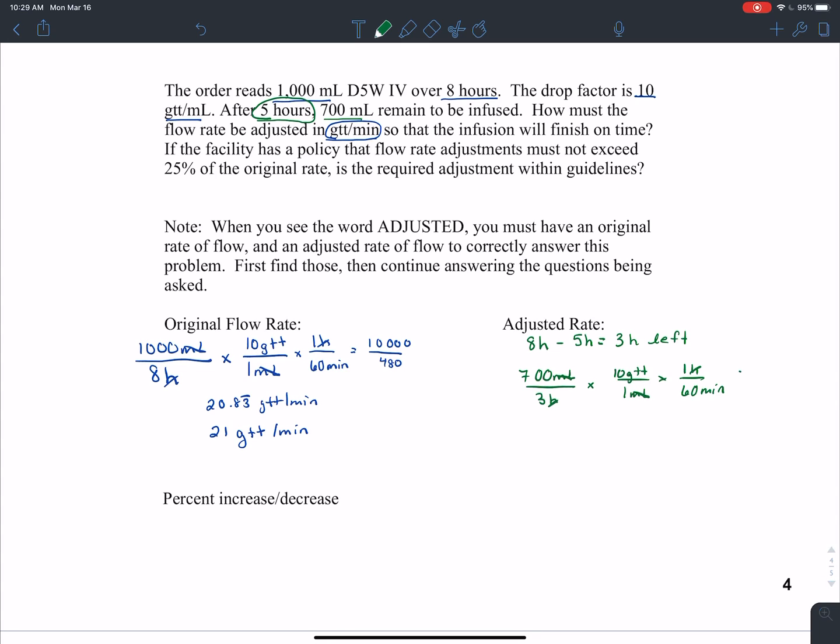When I multiply straight across, that gives me 7,000 over 180. When I divide, that gives me 38.8 repeating drops per minute. Same thing, I need to round to the nearest whole number. So that's going to give me 39 drops per minute.